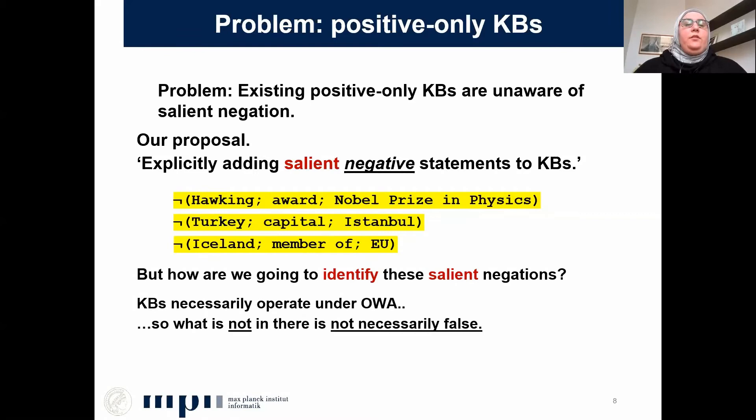But how are we going to identify these salient negations? Knowledge bases operate under the open world assumption, so a statement that is not asserted in the knowledge base is not necessarily false — it might be, but it is considered unknown. To be clear, we are not proposing to add every possible negation. We are not interested in non-salient statements like that Hawking did not win the player of the year award, or that Iceland is not a member of the Arab League. These negations are correct, but they are not salient.